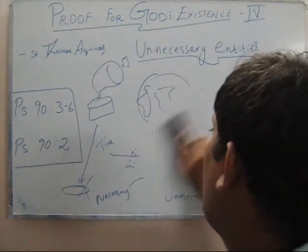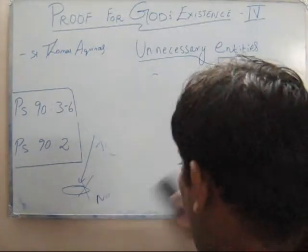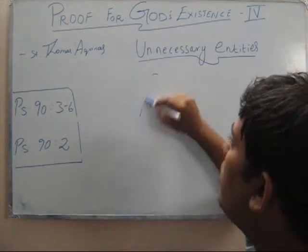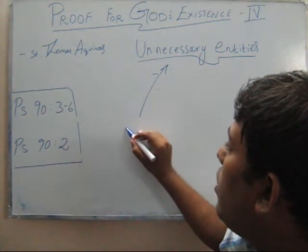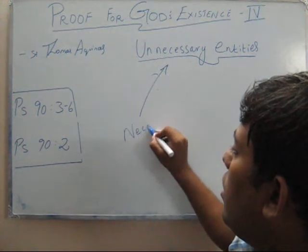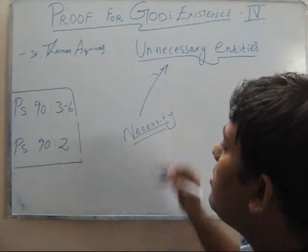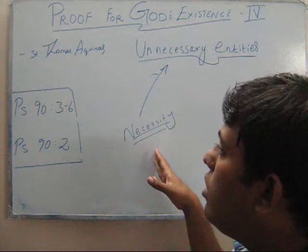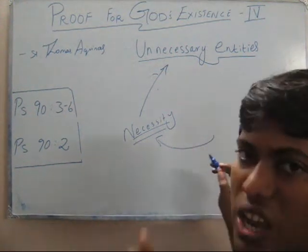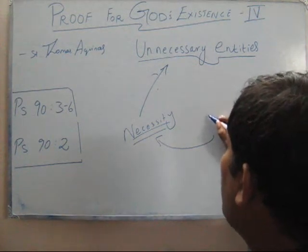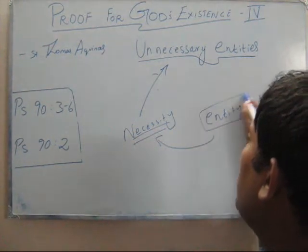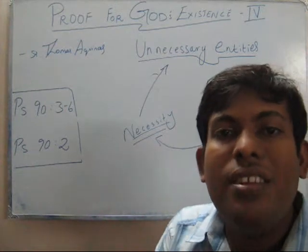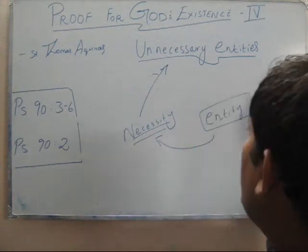This is Aquinas's style of coming to a conclusion: if there are unnecessary entities that have come about, they must have been brought in by a necessary entity. Once that necessity expires, it becomes an unnecessary entity. There is a chain, and at the top is one entity which has always existed and does not derive its necessity from anything else.